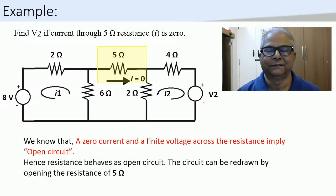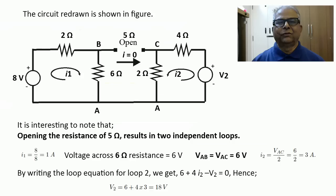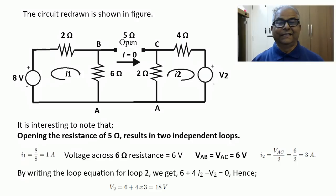This means the resistance of 5 ohms, across which the current is zero, can be considered to be an open circuit. We can draw the circuit implementing this fact — the resistance of 5 ohms is open. Observe the result: opening the resistance of 5 ohms simplifies the circuit.